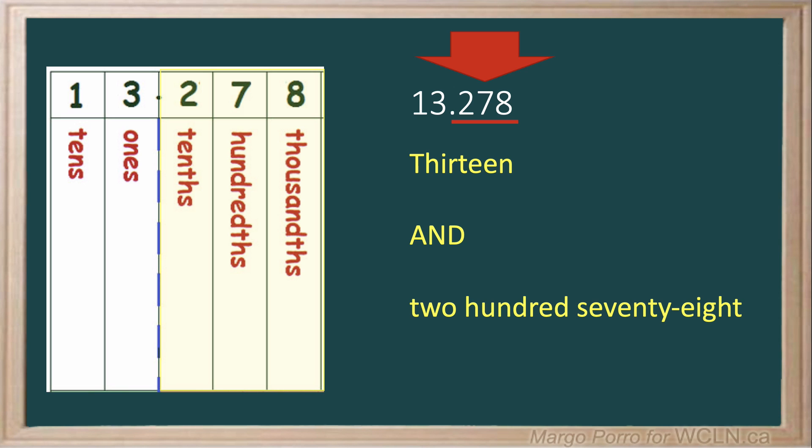Then you follow this with the place value of the last digit. The last digit eight is in the thousandths place. Put it all together, you would read this number: thirteen and two hundred seventy-eight thousandths.